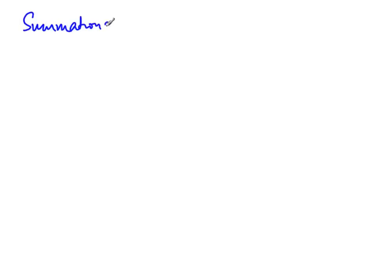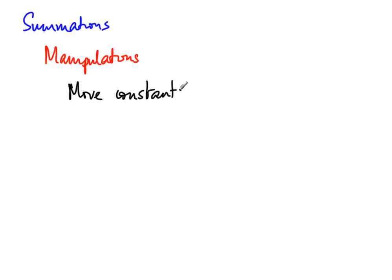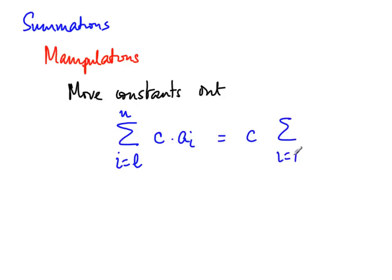Since we will be solving many summations, we should review some basics. There are some useful simplifications. The first manipulation is moving constants out: if we have a summation from l to u of c·aᵢ, where c does not depend on i, we can pull c out and write c times the summation from l to u of aᵢ.